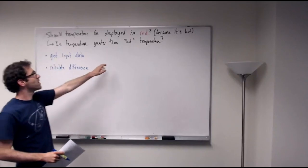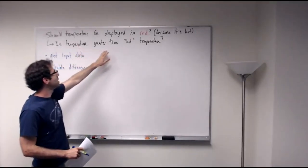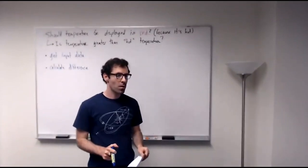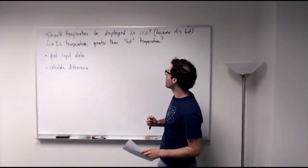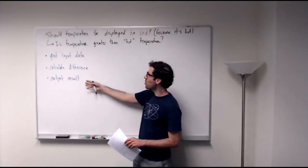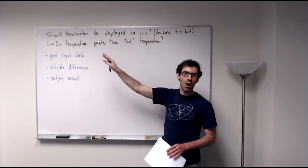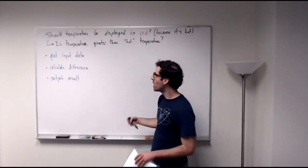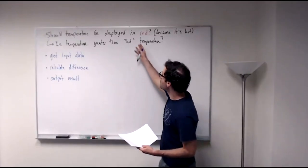Next we'll calculate the difference between the current temperature and the hot temperature as a way to test whether it's greater than the hot temperature or not. Then we'll need to output the results of this calculation so that we can see what the program is doing, and also because as part of this weather app, this calculation would need to go into the next step of deciding what is displayed.